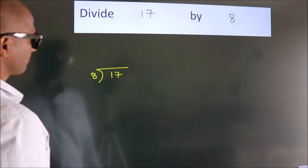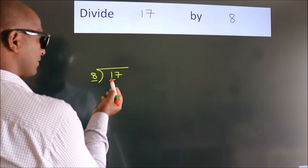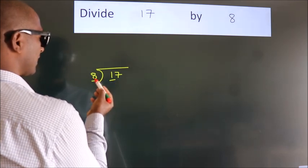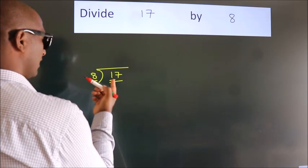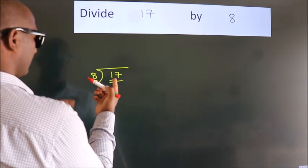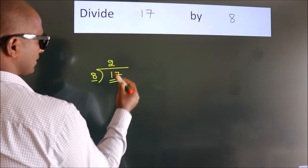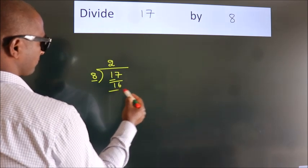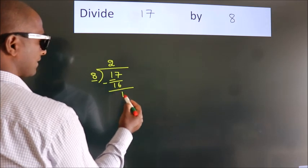Next, here we have 1. Here 8. 1 is smaller than 8, so we should take 2 numbers: 17. A number close to 17 in the 8 table is 8 twos, 16. Now we should subtract. We get 1.